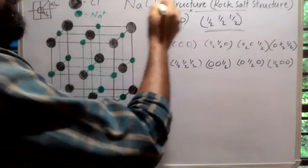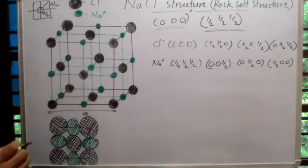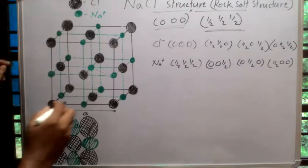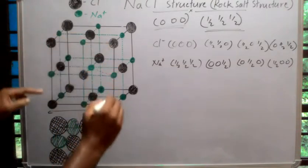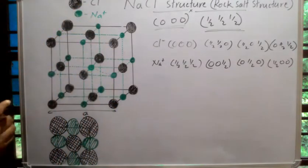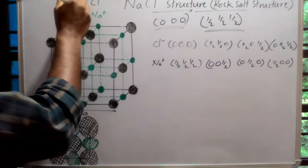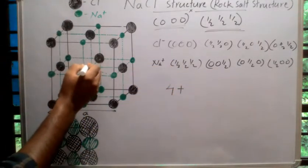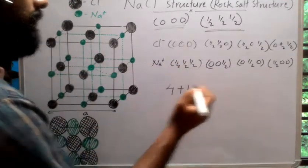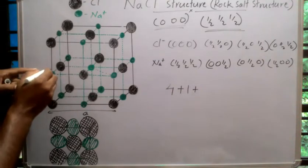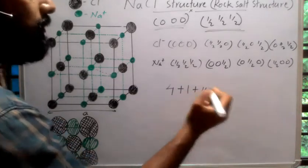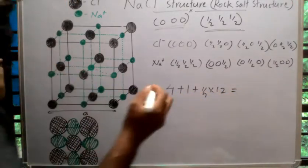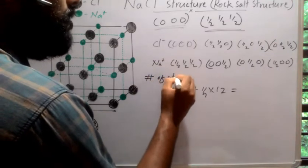Now let's calculate the number of atoms in a sodium chloride unit cell. The chlorine atoms are attached to one FCC lattice and the sodium atoms to another. The total number of atoms in an FCC lattice is four. Adding the central sodium ion, which contributes one, plus the sodium ions on the 12 edges, each contributing one-quarter, gives 12 × (1/4) = 3.